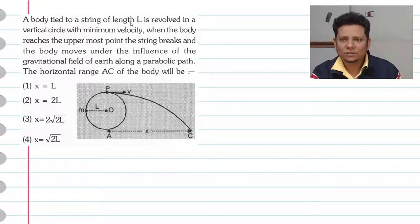Next question: A body tied to a string of length L is revolved in a vertical circle with minimum velocity. When the body reaches the uppermost point, the string breaks and the body moves under the influence of the gravitational field of earth along a parabolic path.